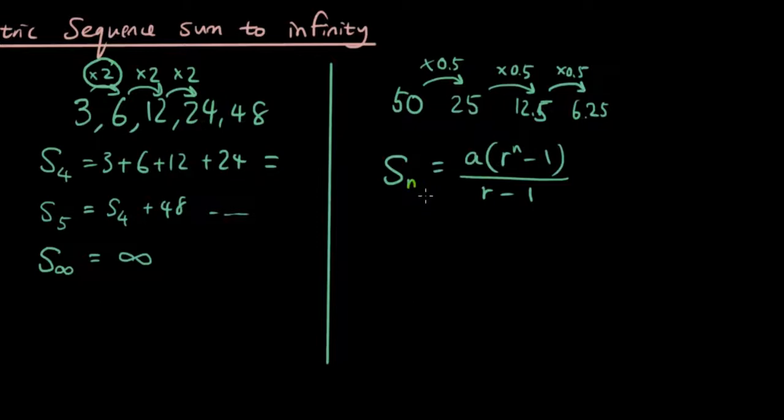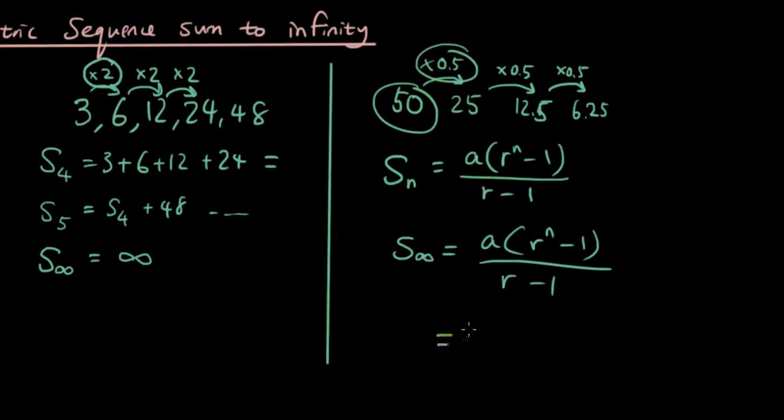And if I want the sum to infinity, what happens is that we substitute infinity for n. If I substitute infinity where n is, and I substitute in 50 for a, and 0.5 for r, I will get 50 bracket 0.5 to the power of infinity minus 1 over 0.5 minus 1.